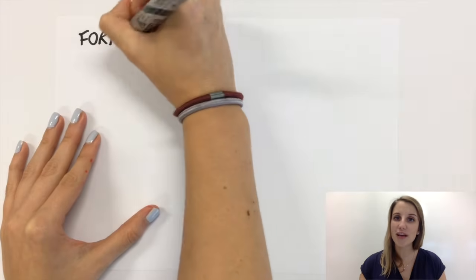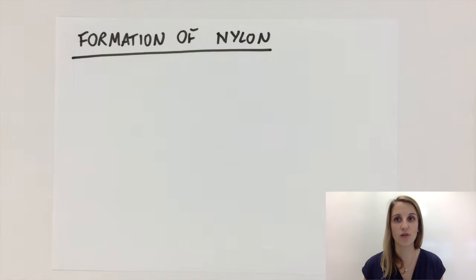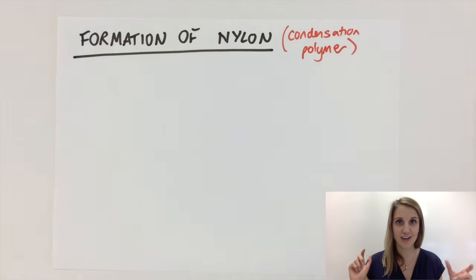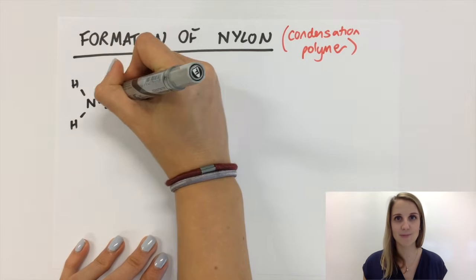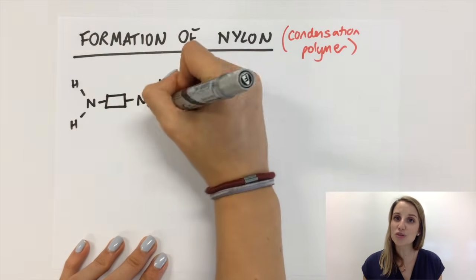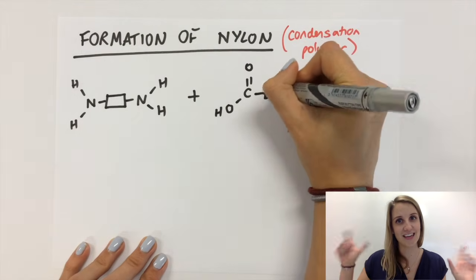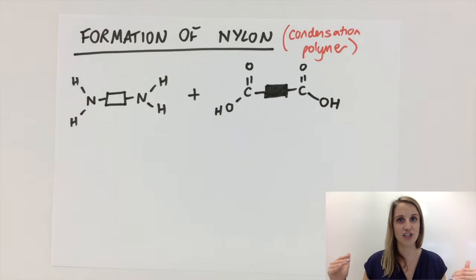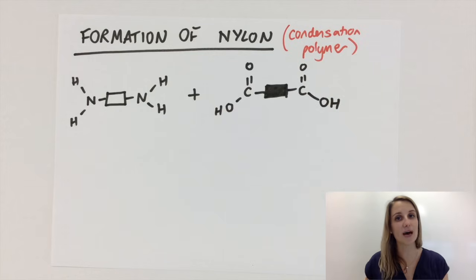Here are my two monomers that I'm going to use in the construction of nylon. They are different from each other, which is what makes it special from addition polymerization, and they also both have reactive sections at each end, which is what allows them to build up into that long polymer.